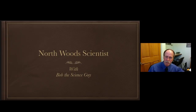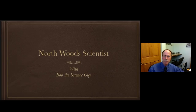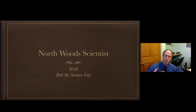Hi everyone, greetings from northern Michigan. This is Bob the Science Guy, and today we have another episode of Northwood's Scientist. Today I'm going to respond to one of the comments on one of my videos: why is it that we only see one face of the moon all the time? We never see the backside of the moon. That's a process called tidal locking, and let's see if we can solve this conundrum.